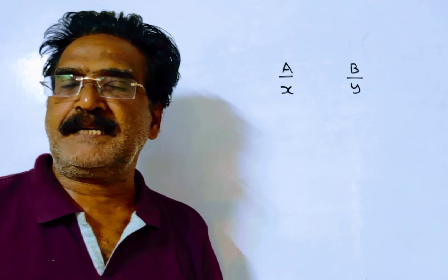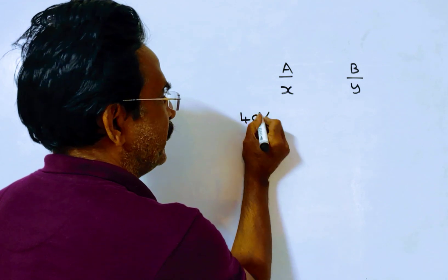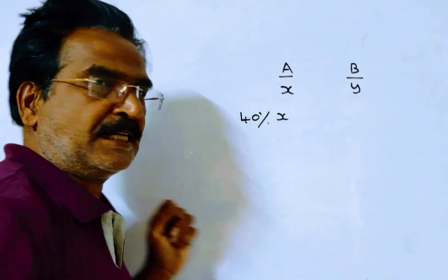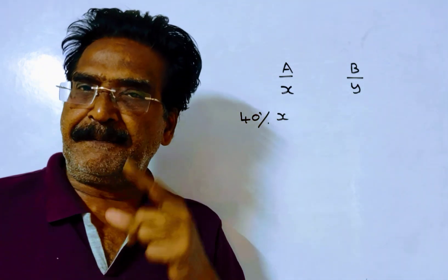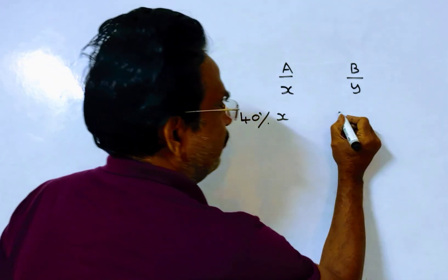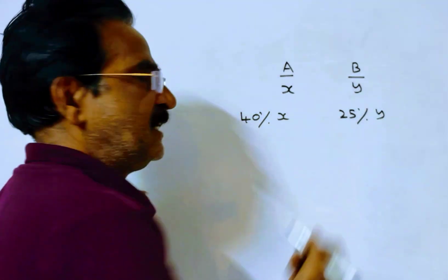A spends 60% of his income means A saves 40% of his income. B spends 75% of his income implies B saves 25% of his income. This is B's savings, 25% of his income.